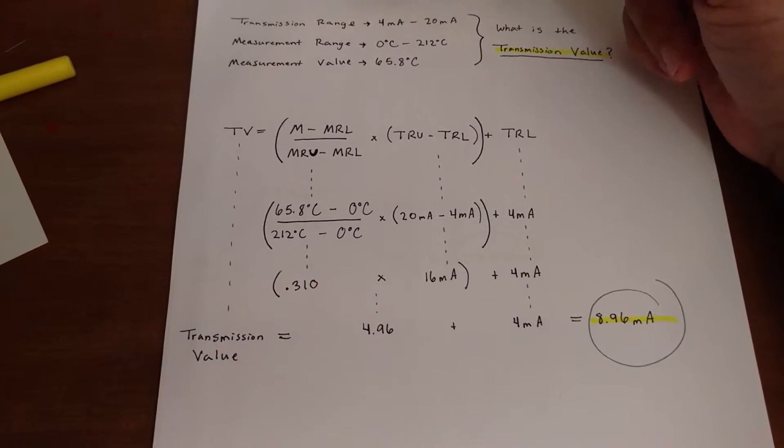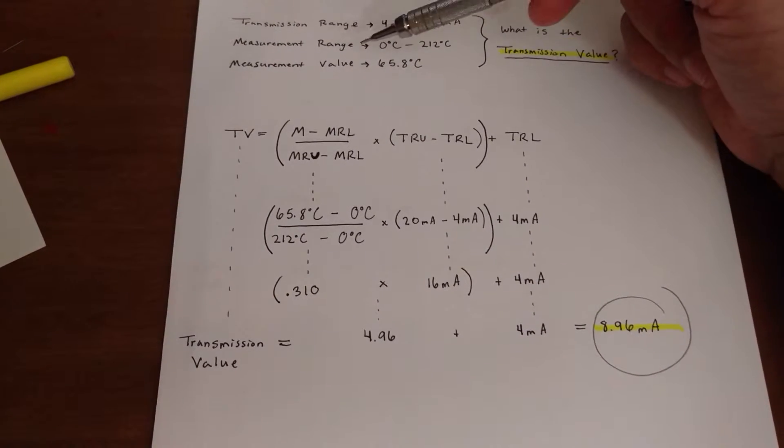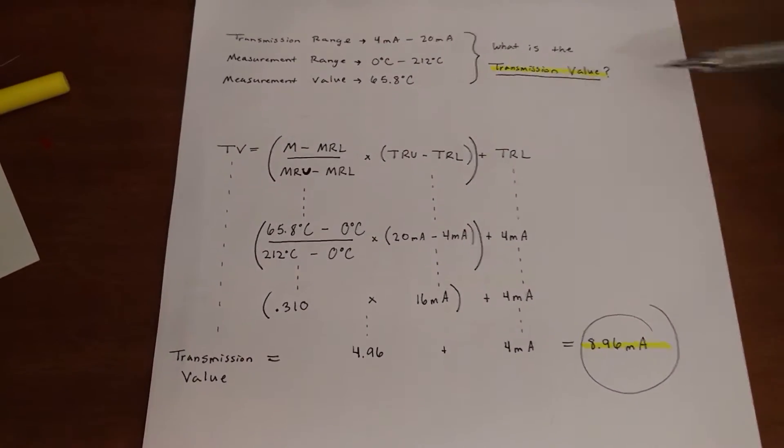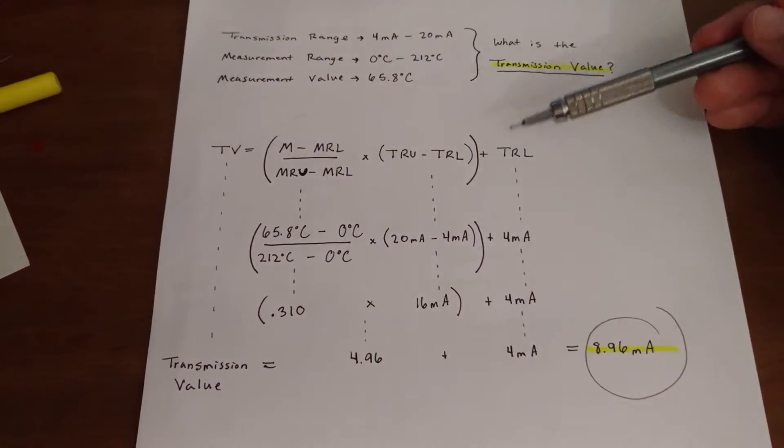You're working a problem, they give you your transmission range, your measurement range, and your measurement values. This is the formula that you're going to use to find your transmission value.